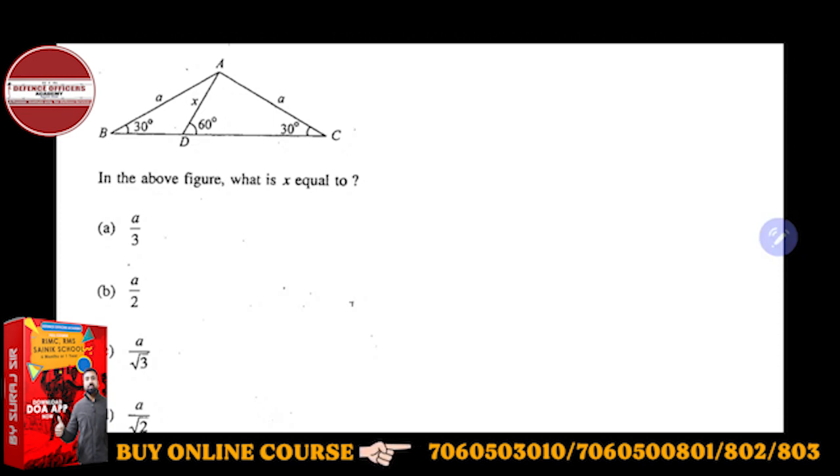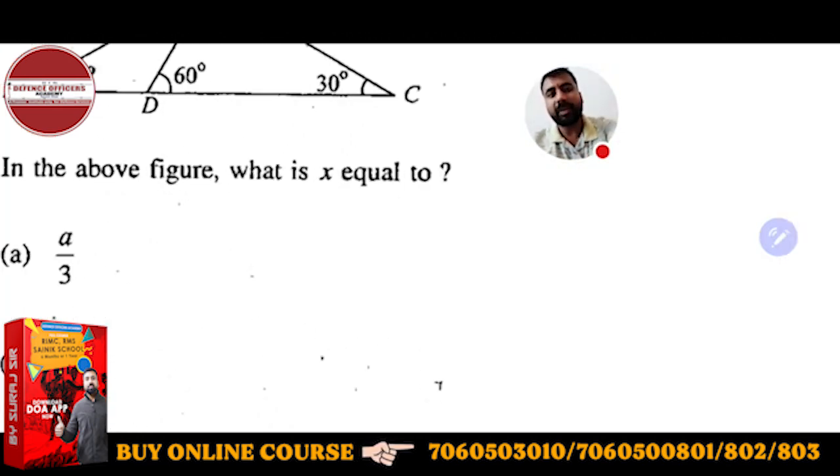So there is a triangle given to you and in this figure you have to find x, and four options are also given to you. You have to find x in terms of a. A triangle is given to you, I will zoom this.